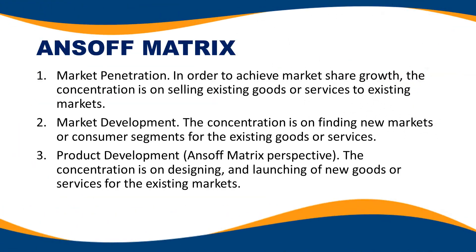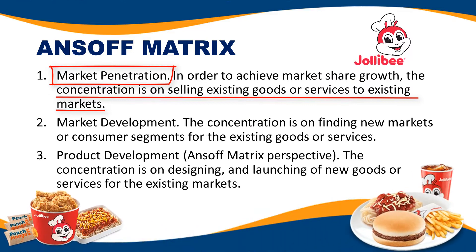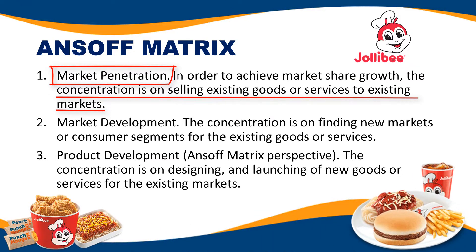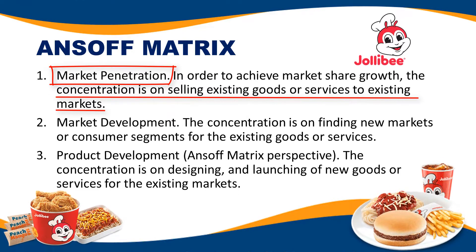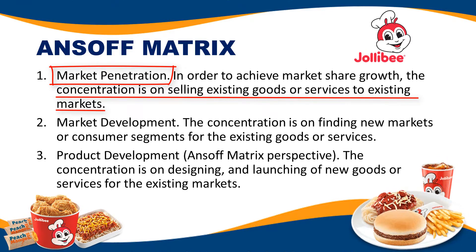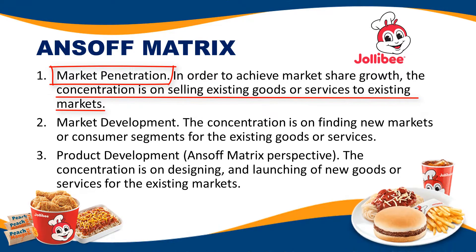Number one: marketing or market penetration. In order to achieve market share, the concentration is on selling existing goods or services to existing markets. For example, Jollibee — their existing goods are Chicken Joy and Yum Burger, and these are already accepted by existing markets. The focus is on the distribution of existing goods. If they will be launching a new product, that is another strategy.